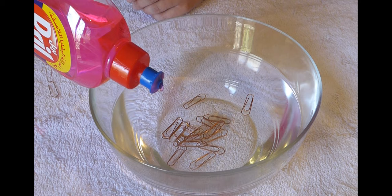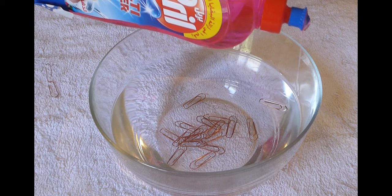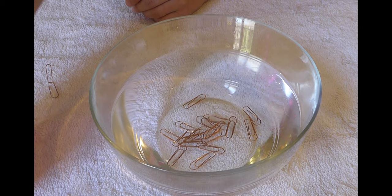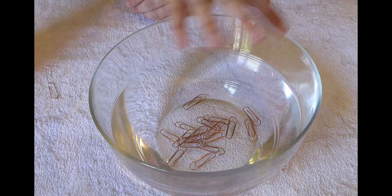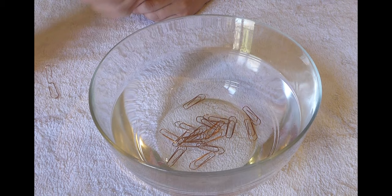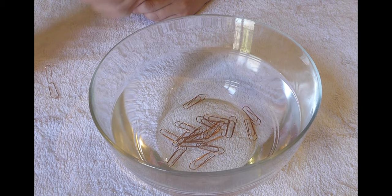And just like doubt, dish detergent will actually break up the molecules of the surface tension of this water and cause those paper clips to sink, even the ones that were floating. And that's just like faith and doubt.